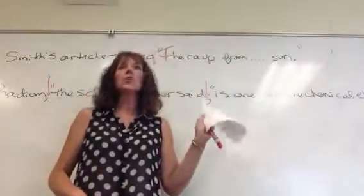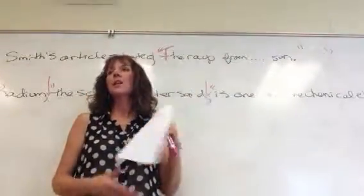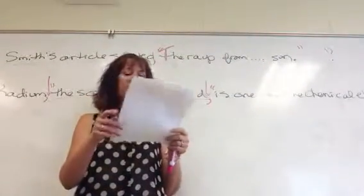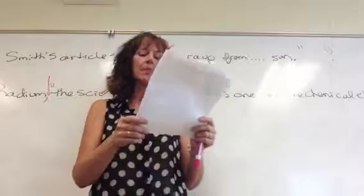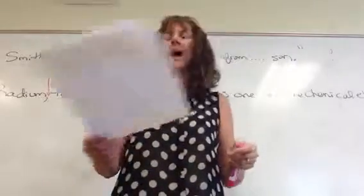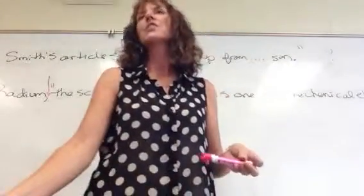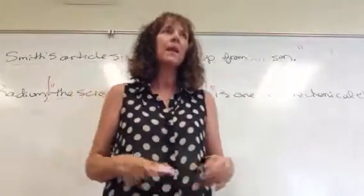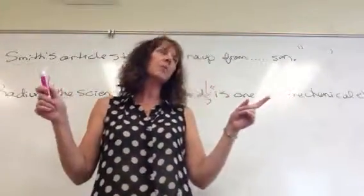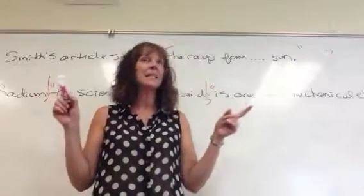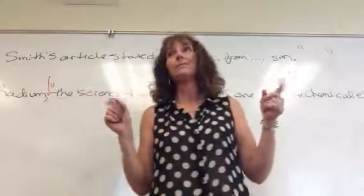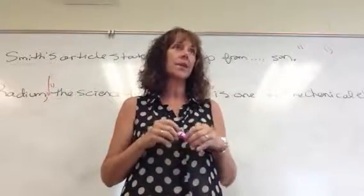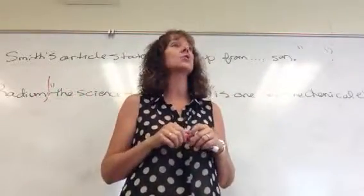On your mid-term review sheet, you have a question towards the end, number 12: what are the four things to remember to include when you're doing a visual element inside of a paper? The first thing is it needs to be text-wrapped.